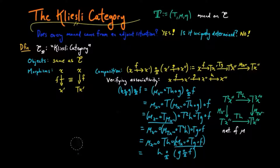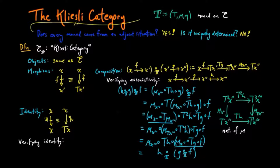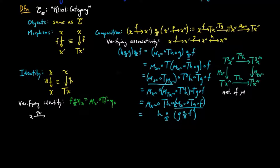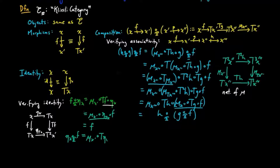So we are finished showing associativity. Next, the identity morphism on an object X in the Kleisli category is defined to be the unit of the monad on X. Verifying the identity laws, we unwind to the composition in E. We have the pre-composition of the identity on a compatible morphism F in the Kleisli category. By naturality of eta we can substitute eta_{TX} F for TF eta_X. Then by the unit law for the monad, mu_{X'} eta_{TX} equals the identity on X', and we see it equals F. If we post-compose by the identity, by the other half of the unit law, the composition is again equal to F. Therefore, the Kleisli category is a well-defined category.